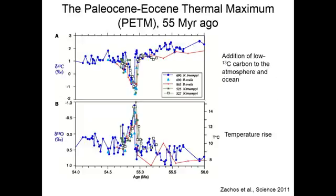If we zoom in on it, what we see here are records from deep sea foraminifera, recording conditions in the deep ocean. We see that in many different deep sea sediment cores, there is a rapid decrease in the delta-18 recorded by these foraminifera. When there's very little permanent ice at the poles, the delta-18 mostly tells us about the temperature of the deep ocean. This record is converted to deep sea temperature on the right hand side, showing about a 5 degree increase.